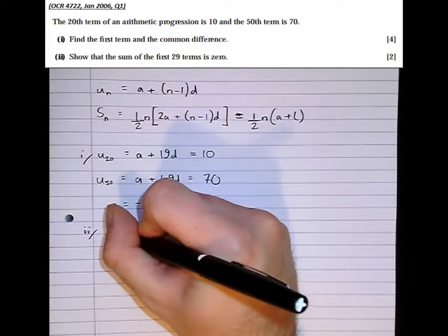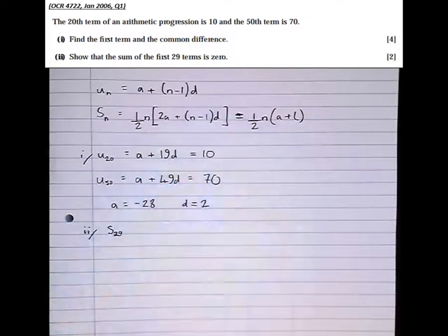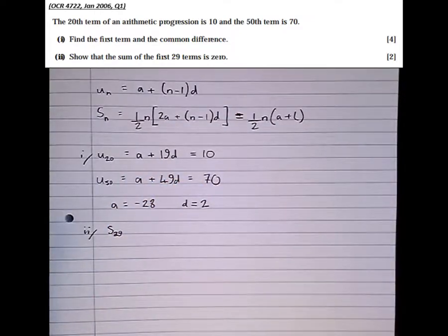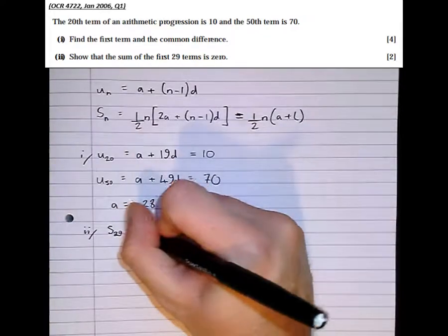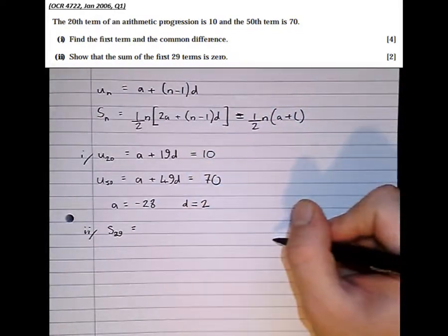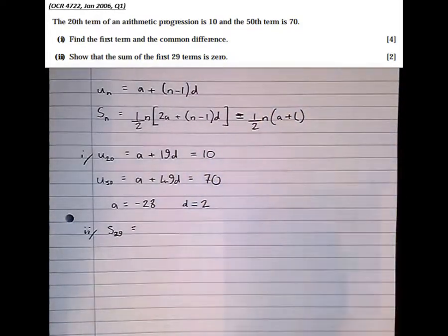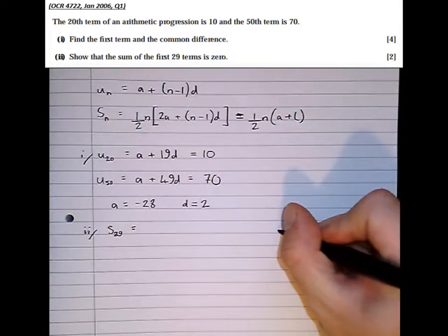Okay, let's find the sum of the first 29 terms. But because it's a show that question, we simply can't just use the calculator. What we need to do is show full working. So the sum of the first 29 terms. Well, what we need to do in these questions, always start with writing what the variables are equal to.